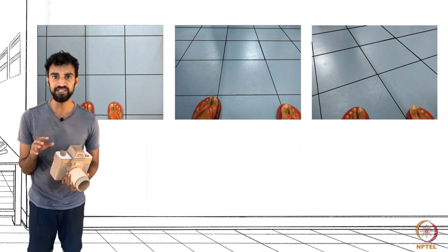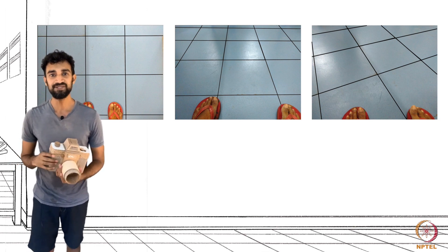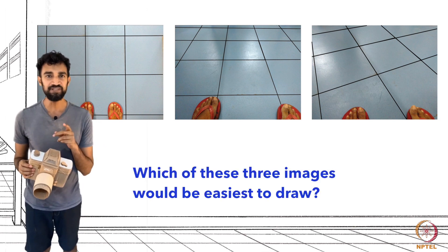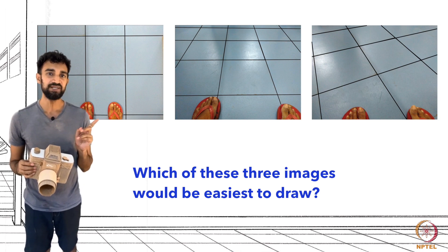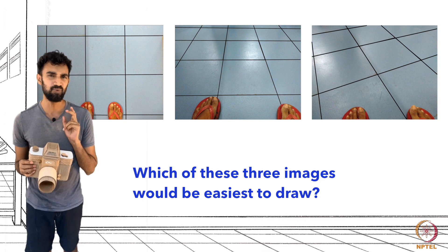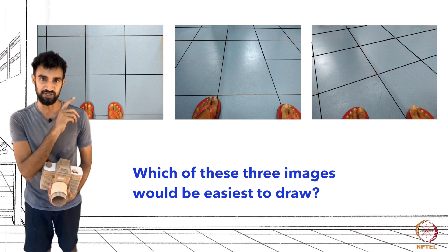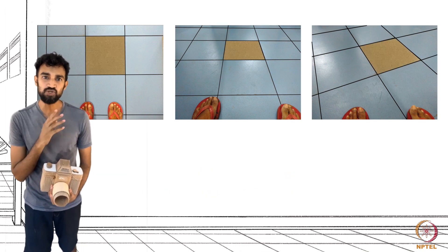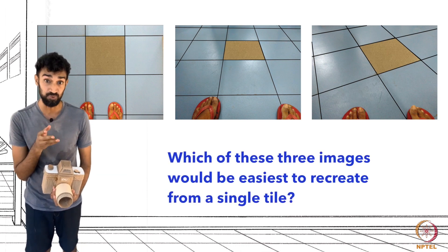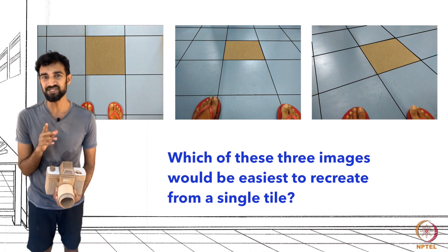So now we have three different perspective views of the same tiled floor. So here's a question. Which of these three perspective views do you think would be the easiest to draw? What I mean is, suppose you take a single tile from each of these three perspective views. Which one would be the easiest to recreate?